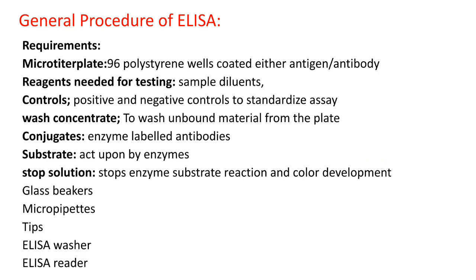The general requirements for ELISA include a microtiter plate containing 96 polystyrene wells, coated with either antigen or antibody. Reagents needed include sample diluents, positive and negative controls to standardize the assay, wash concentrate to remove unbound material, conjugates like enzyme-labeled antibodies, substrate, stop solution, glass speakers, microtiter plates, tips, micropipettes, ELISA washer, and ELISA reader.